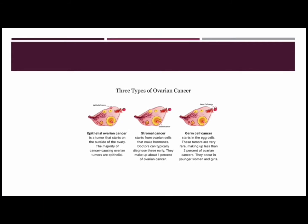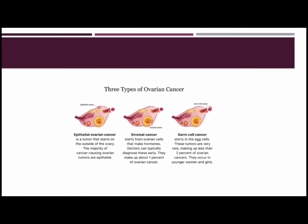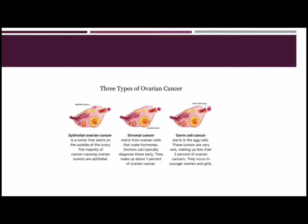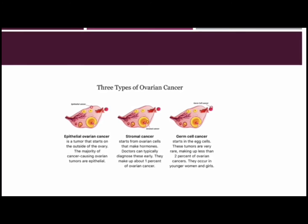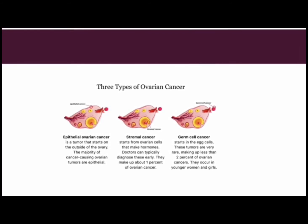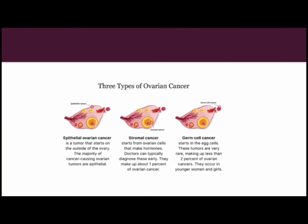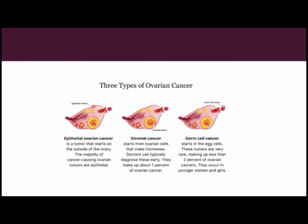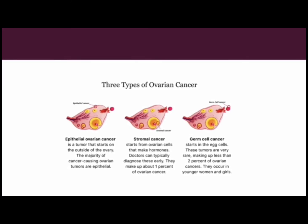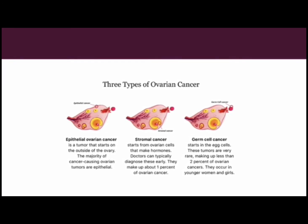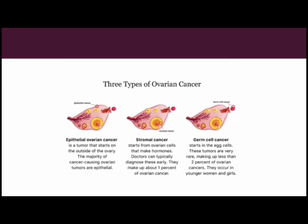Epithelial ovarian cancer is a tumor that starts on the outside of the ovary, and the majority of cancer-causing ovarian tumors are epithelial. Stromal cancer starts from ovarian cells that make hormones and makes up about 1% of ovarian cancers. Germ cell cancer starts in the egg cells — these tumors are very rare, making up less than 2% of ovarian cancers, and occur in younger women and girls.